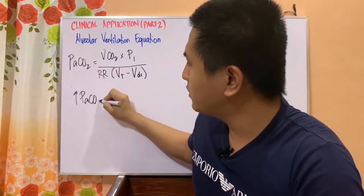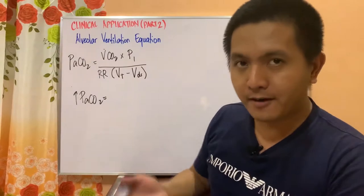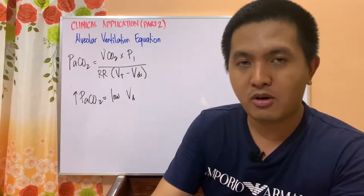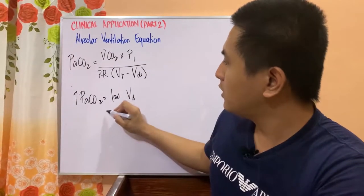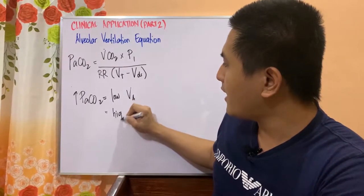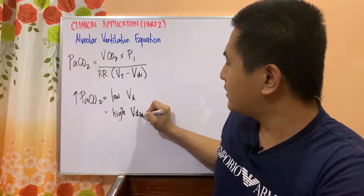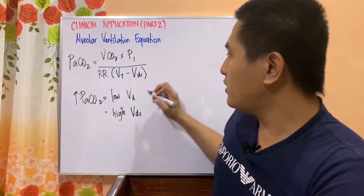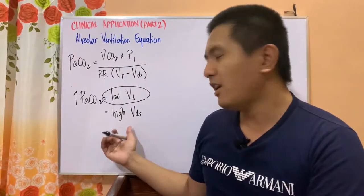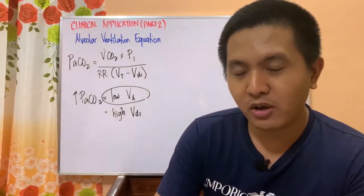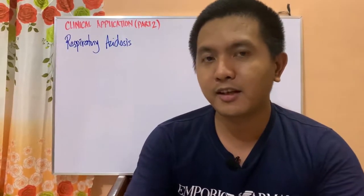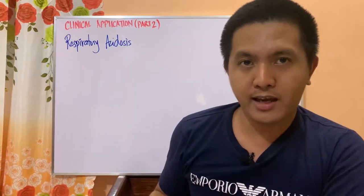High PaCO2 would result from having a low alveolar ventilation or low alveolar volume. Conversely, high PaCO2 would result from a high dead space volume. However, clinically speaking, it's only low alveolar ventilation that affects PCO2 remarkably. High dead space volume actually only causes minor changes in a patient's PCO2. So let's start the lesson with respiratory acidosis.